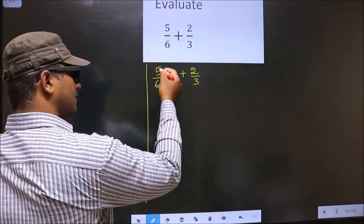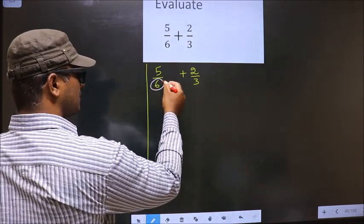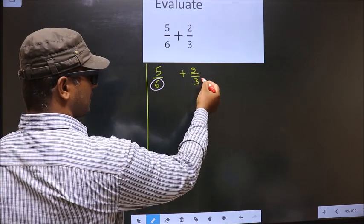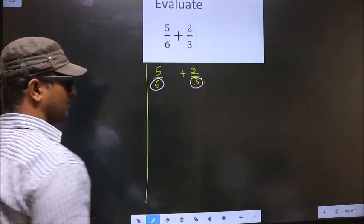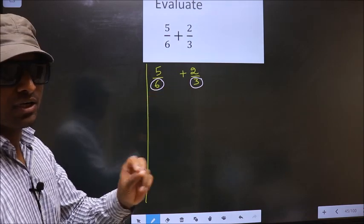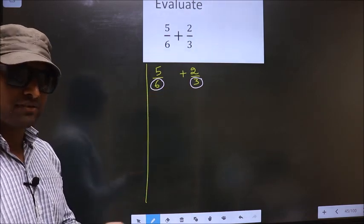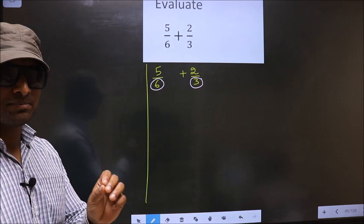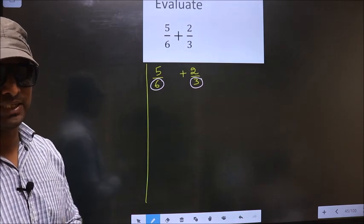In this fraction the denominator is 6 and here the denominator is 3. The denominators are not same. Whenever the denominators are not same we should take LCM of them.